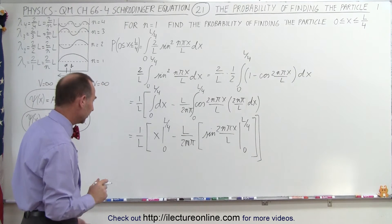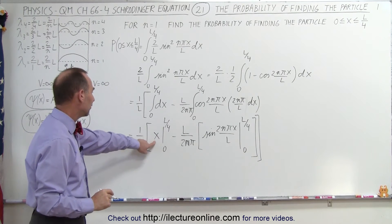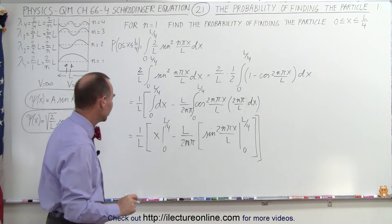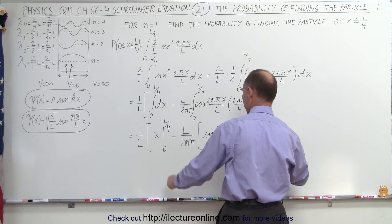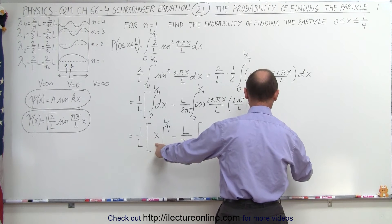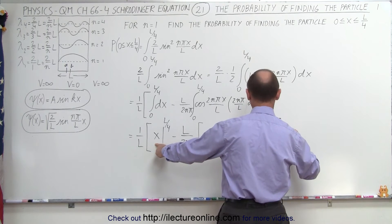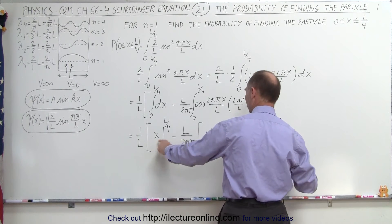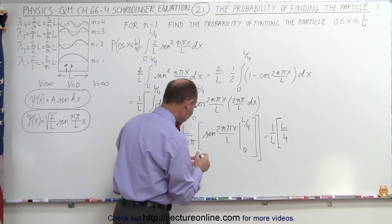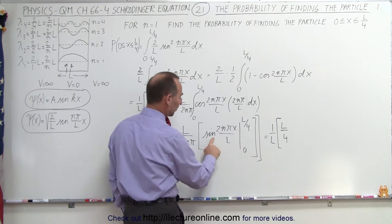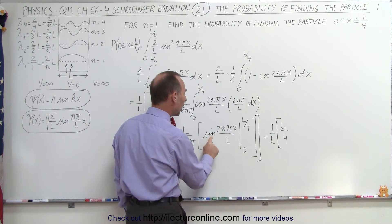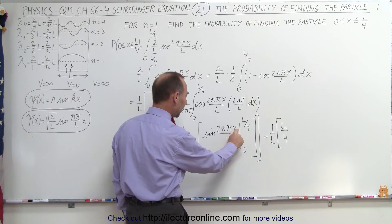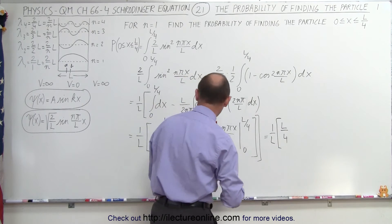So now we're going to go ahead and evaluate this. So the first one is easy to evaluate, that's simply L over 4 times 1 over L, so this becomes 1 over L times L over 4, because when we plug in the lower limit, we get 0. Now notice here, when we plug in the lower limit, the sine of 0 is 0, so we don't have to worry about that. When we plug in the upper limit, we get the sine of L over 4, so let's go ahead and do that.